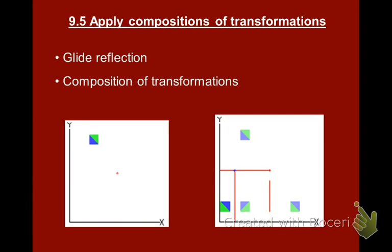In section 9.5, we start putting all three of the different kinds of transformation sections together. So we've done translations, we've done reflections, we've done rotations, and in 9.5, we're going to do compositions. Compositions means we're going to put them together and do more than one.